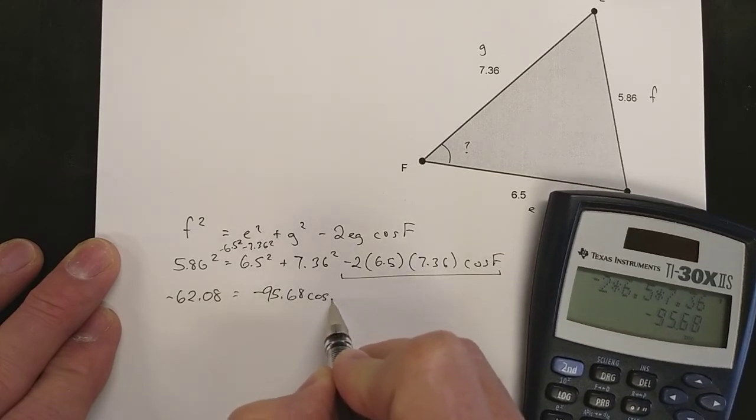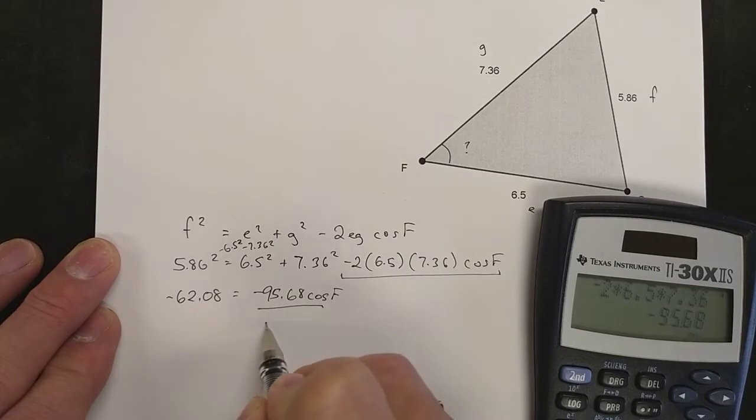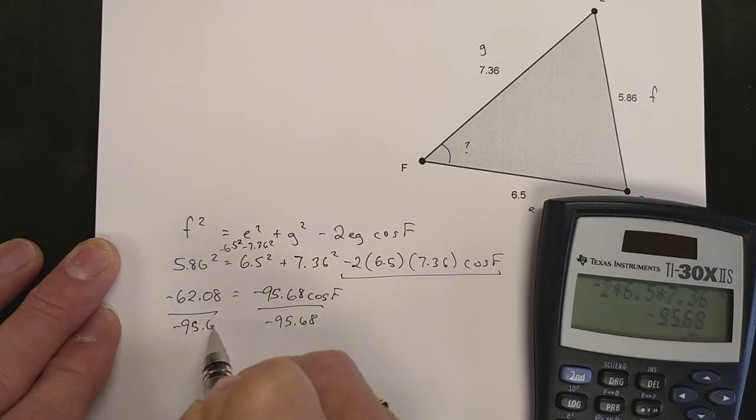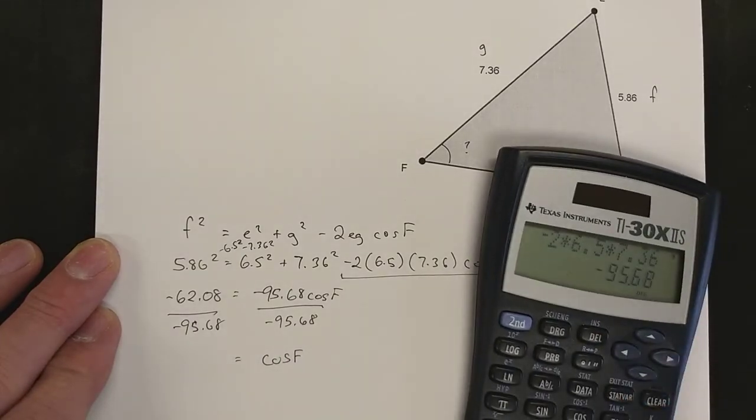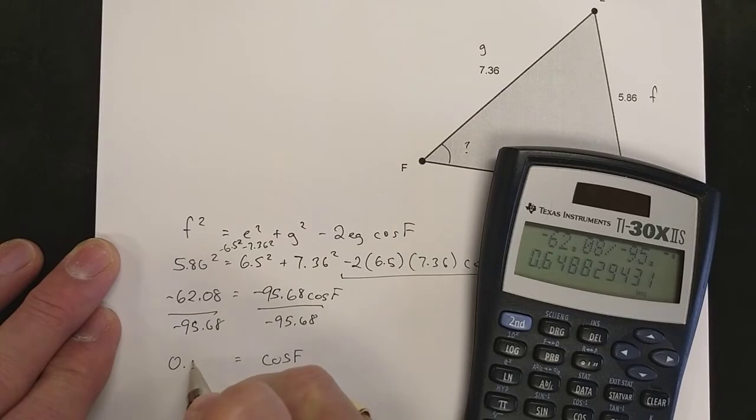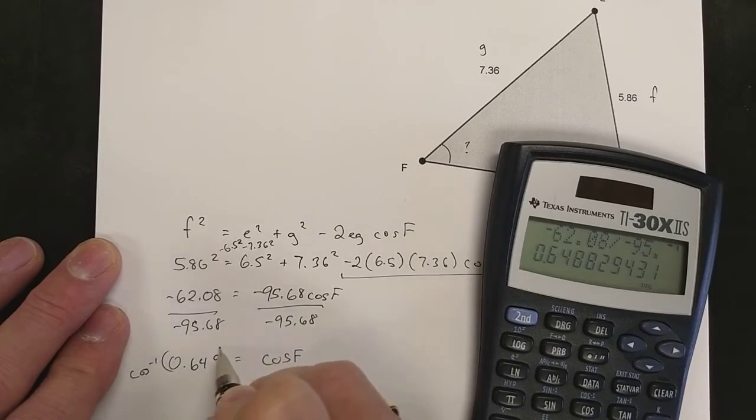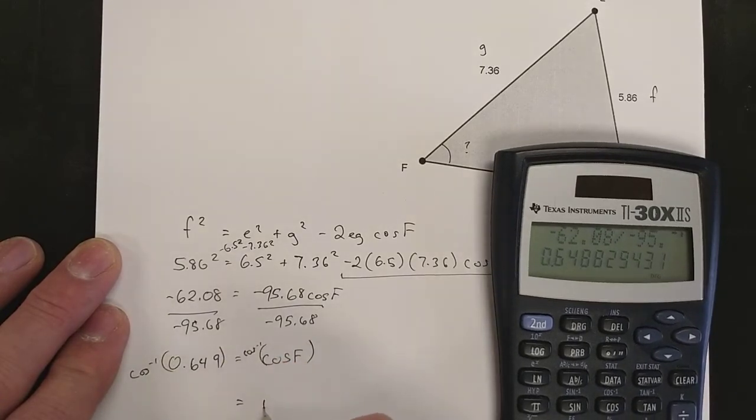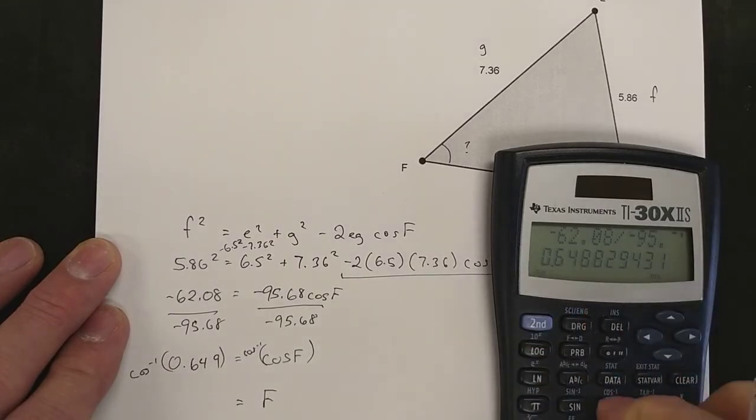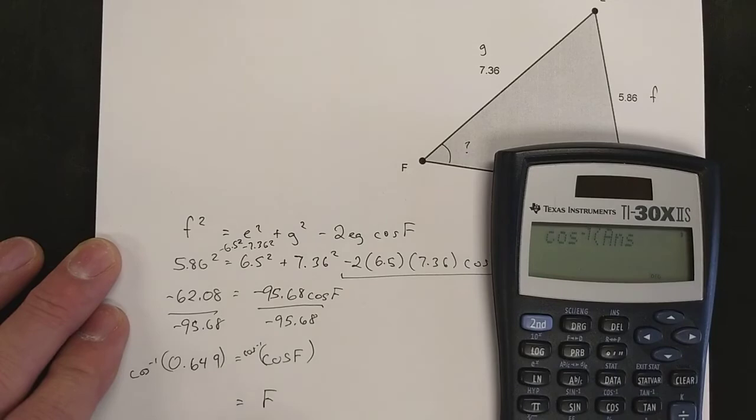I'm going to divide both sides by that. I'll be left with cos F on this side. On this side I will find out what is negative 62.08 divided by negative 95.68, and it turns out to be about 0.649. I need to take the inverse cos of both sides in order to get rid of the cos on this side. The inverse cos of that answer is 49.5.